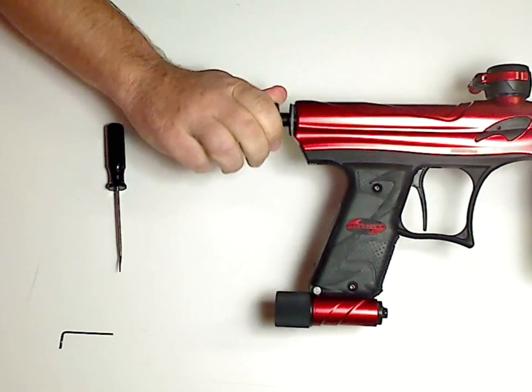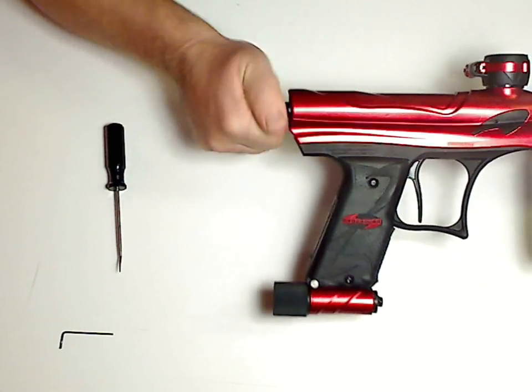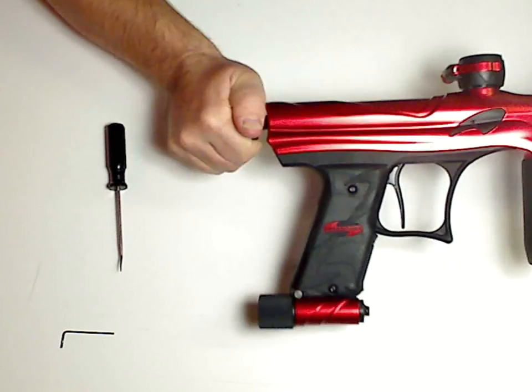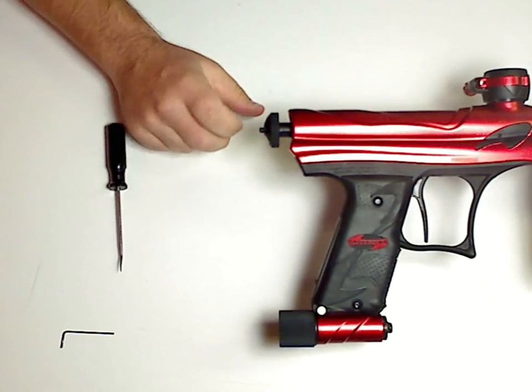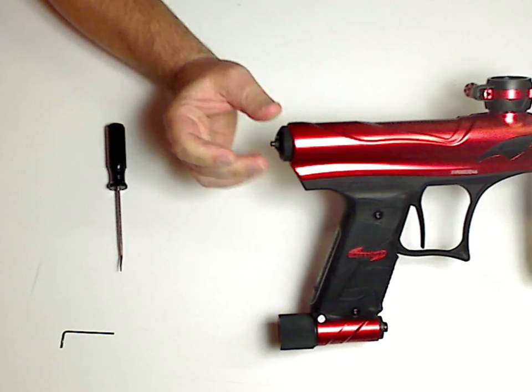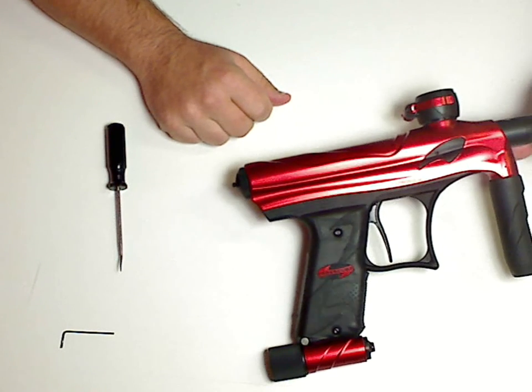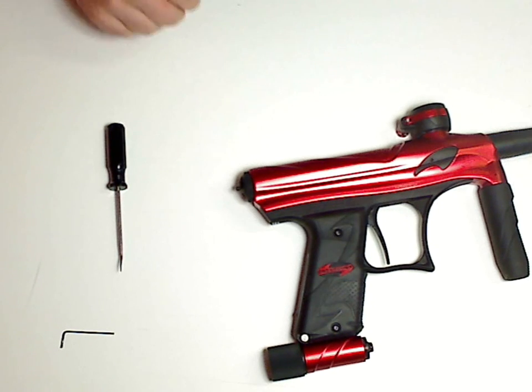Slides right back into the gun. Screws on. And just hand snug. This doesn't need to be cranked on. And when you're done screwing that in, press and push. That's it. That's the toolless end cap on the Crossover XVR.